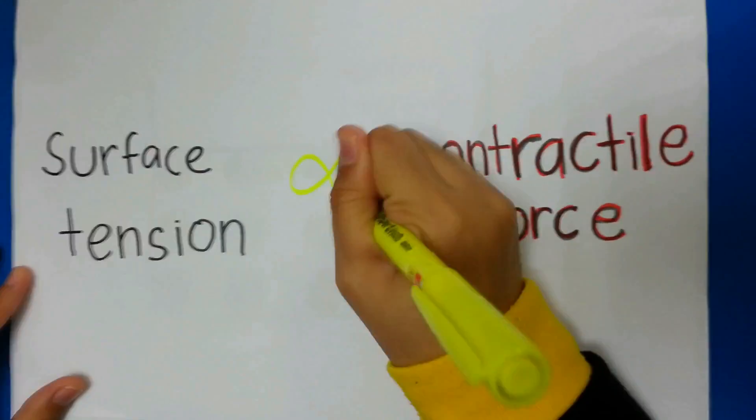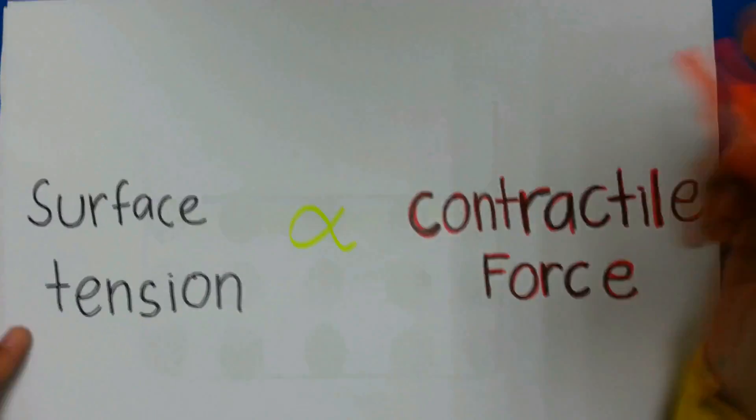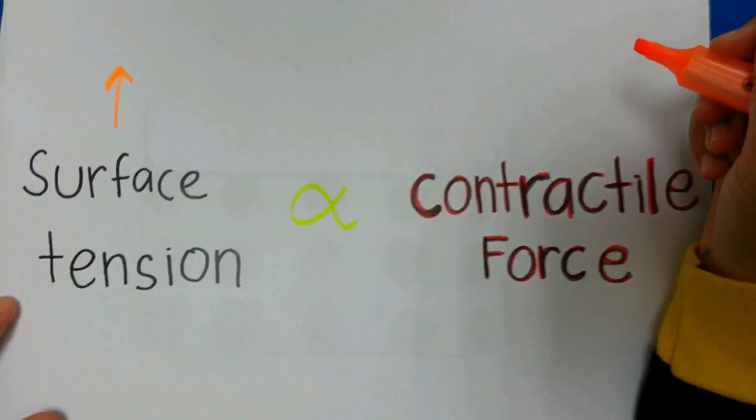The surface tension is proportional to contractile force, which means that if a surface tension of a liquid is high, its contractile force will also be high.